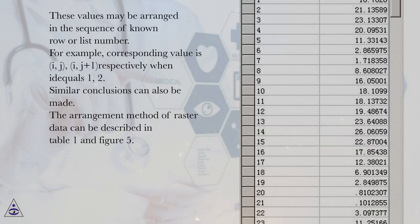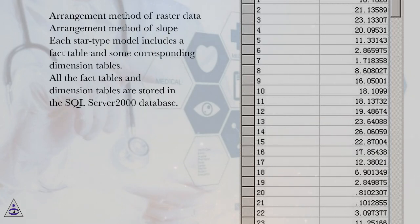Similar conclusions can also be made. The arrangement method of raster data can be described in table 1 in figure 5. Arrangement method of raster data.